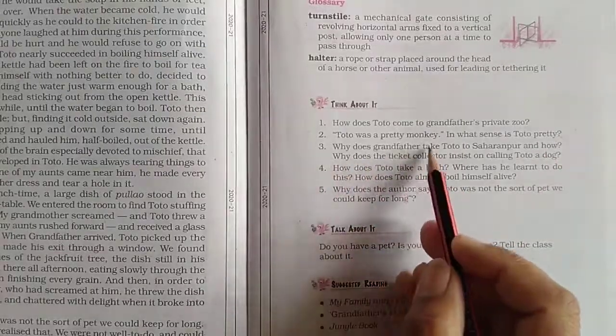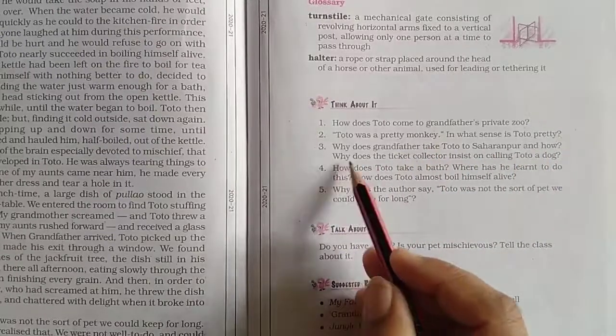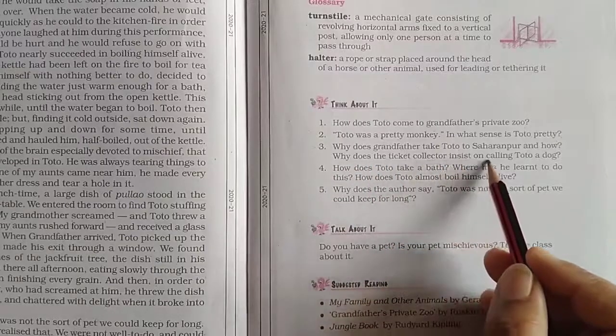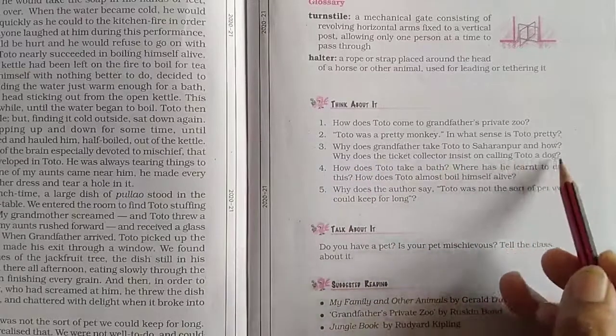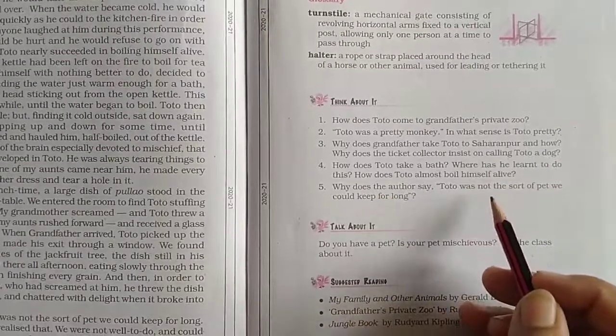Why does grandfather take Toto to Saharanpur, and why does the ticket collector insist on calling Toto a dog? Toto was kept in a big cage in the servants' quarters.